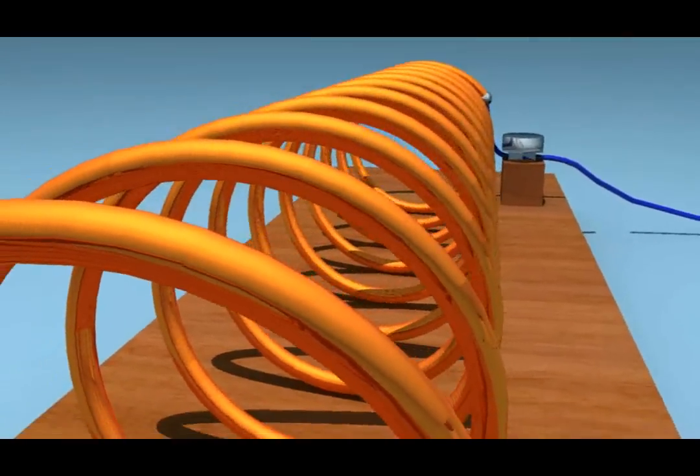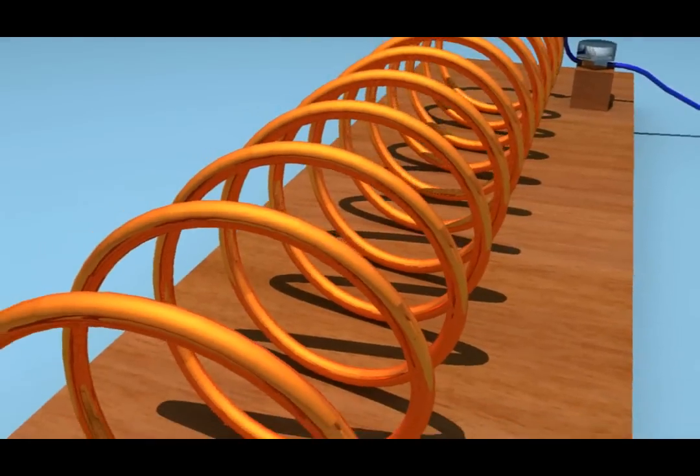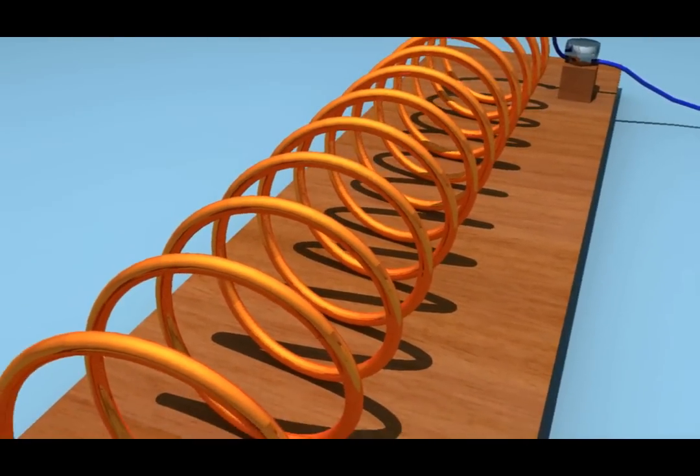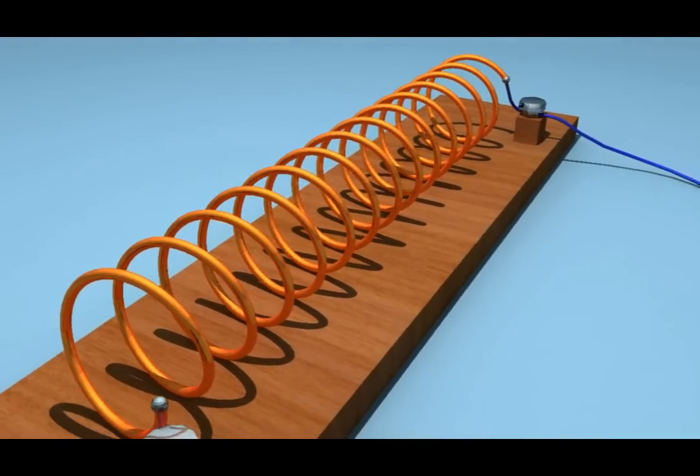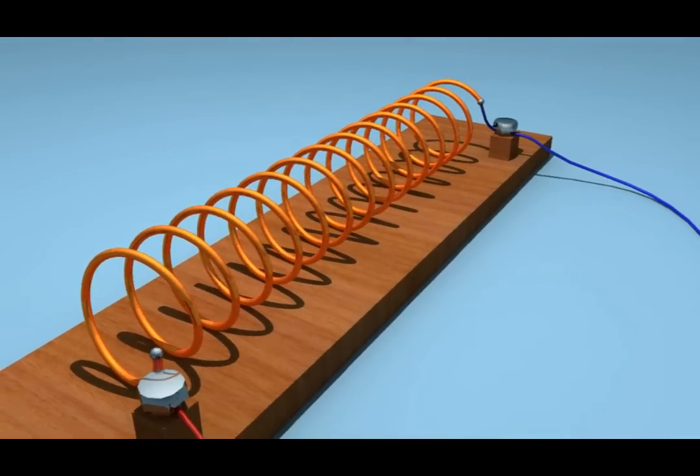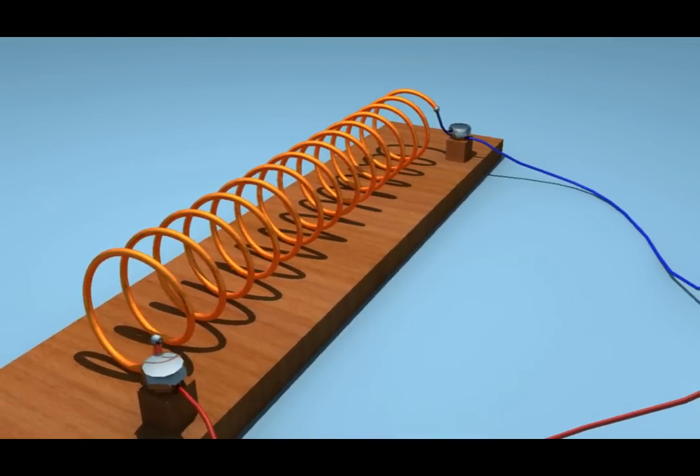Take a long coil with many circular turns of insulated copper, wrapped closely in the shape of a cylinder. This type of coil is called a solenoid.